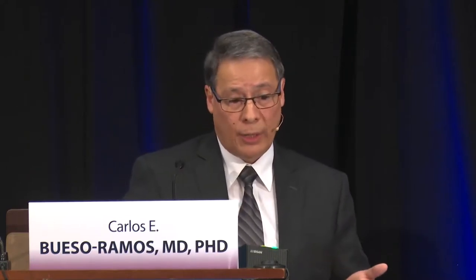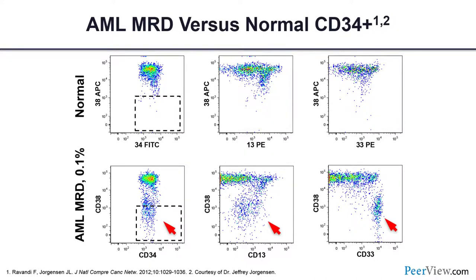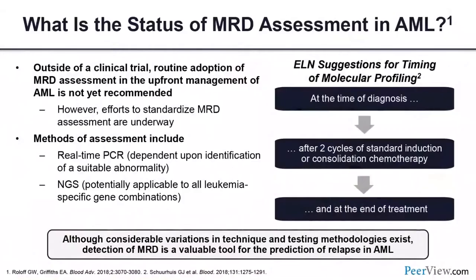It is important to note CHIP abnormalities such as DNMT3A, TET2, and ASXL1 that remain in remission — it's important to document that it is relapsed AML so it qualifies for clinical trials. For MRD assessment by flow cytometry, you use areas where no population should exist within CD38, CD34, and/or CD13 — what Dr. Jorgensen called 'clean sites.' Finding populations in these areas are good readouts for tracking MRD clones. ELN suggests molecular timing at diagnosis, after two cycles of induction/consolidation, and at end of treatment.